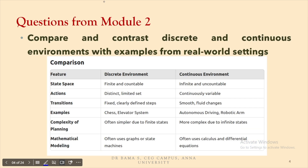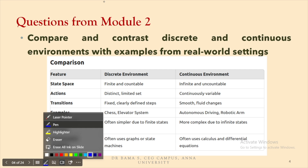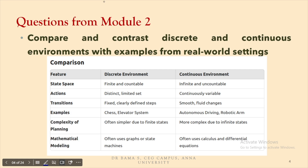Third: compare and contrast discrete and continuous environments with examples from real-world settings. There are comparisons in terms of state space, actions, transitions, examples, complexity of planning, and mathematical modelling. For example, in a discrete environment the transition is fixed, whereas in a continuous environment it is smooth and cannot be defined at a particular point in time. Examples for discrete include chess, and for continuous include autonomous driving and robotic arms.